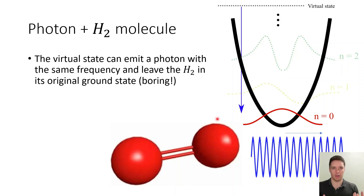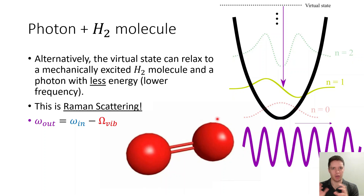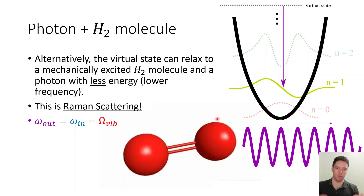Most of the time, we're going to see it decay into a situation where we have the molecular ground state of vibration recovered, and then a photon coming out with the same frequency as the incident one — that's kind of a boring case. But occasionally, we also see the virtual state decaying to a state where the molecule is vibrating, and we get a photon coming out with a downshifted frequency. The frequency of the photon coming out will be the initial frequency minus whatever frequency the molecule is vibrating at. So it's essentially a mechanism that allows us to convert the optical frequency of a photon downwards to a lower frequency.